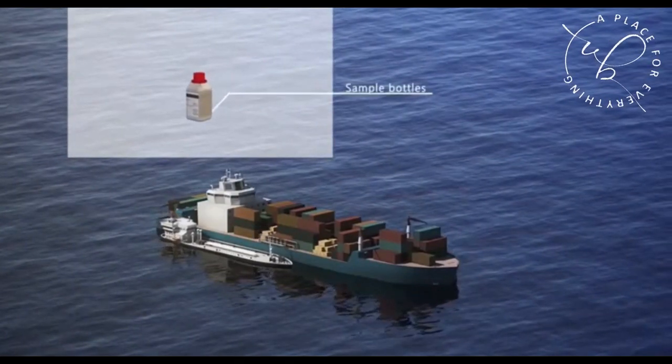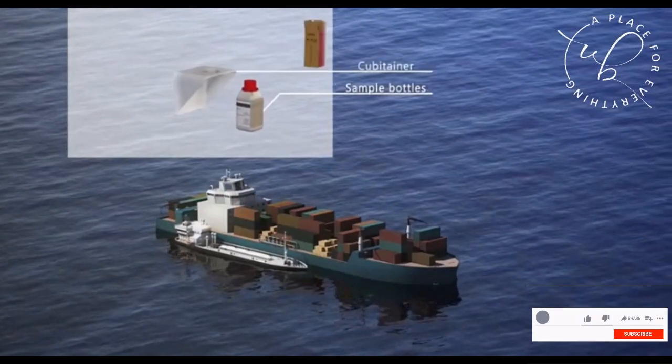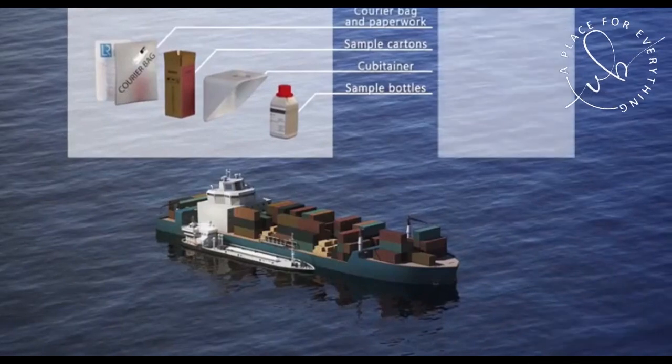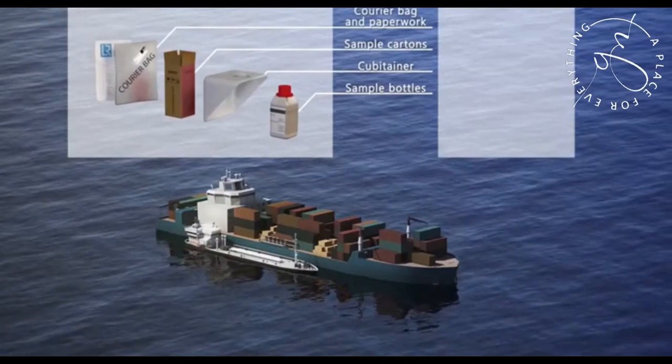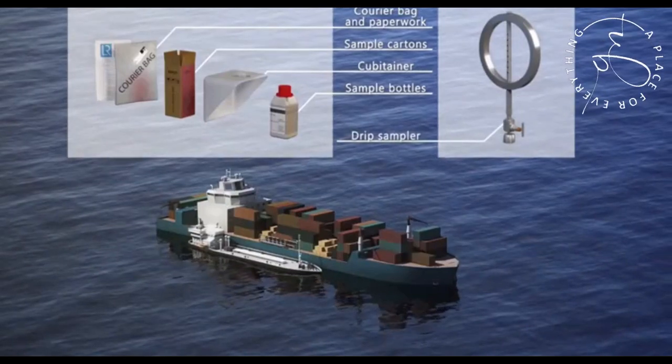The kit contains sample bottles with uniquely numbered capsules, cubitainers, sample cartons, courier bags and all necessary paperwork. We can also provide a drip sampler to aid in the sample collection if you require one.